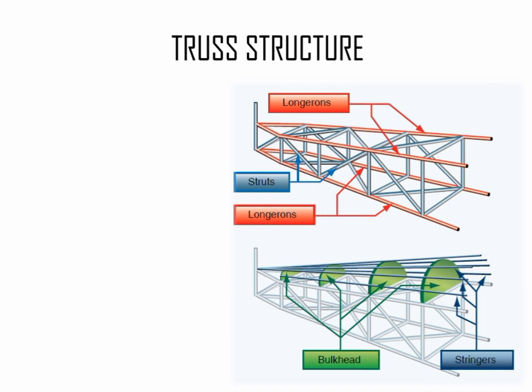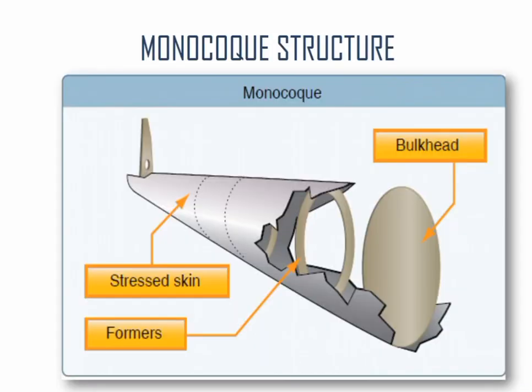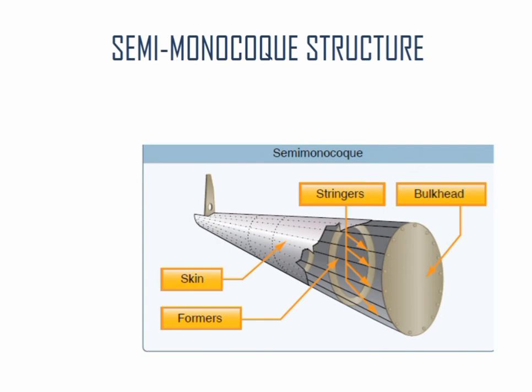Truss structure. Truss is a type of fuselage which consists of wood, cloth, steel and aluminium. Monocoque structure contains stressed skin which carries maximum load, formers and bulkhead.